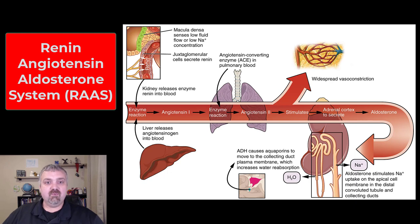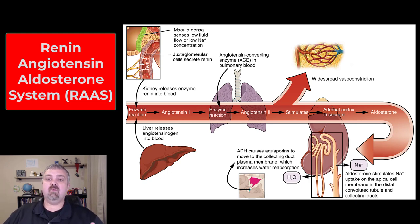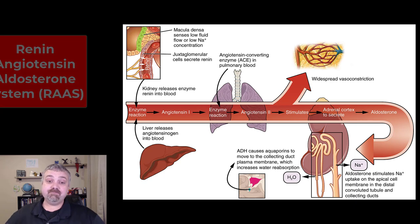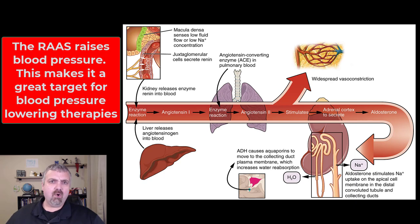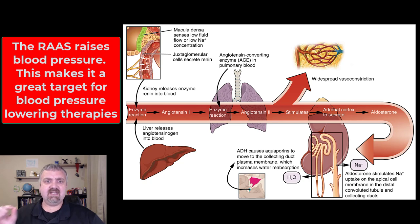So it's called the renin-angiotensin-aldosterone system. Let's walk through the steps, but first let's talk about what it does. Its ultimate job is to bring blood volume and blood pressure back up, and you'll see that's why it starts with the kidneys.